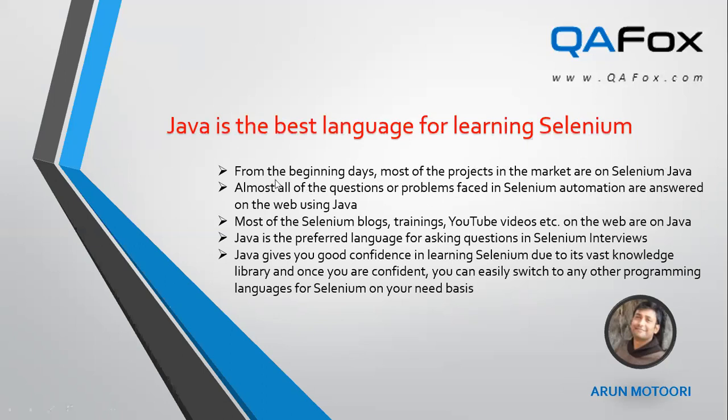The second reason is: whenever you get stuck or encounter an error while working on your Selenium automation code, you'll typically search Google for a solution. When you search Google for Selenium-related problems, almost all of the search results and solutions will be in Java. Not all, but almost all solutions you find on Google use Java programming language.